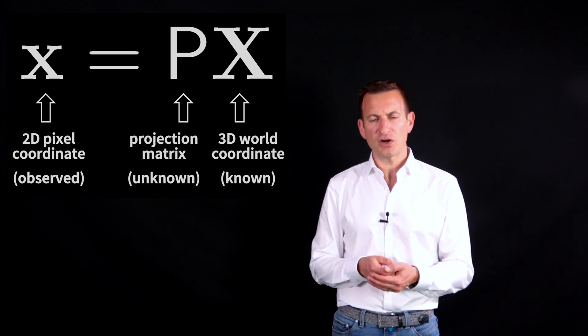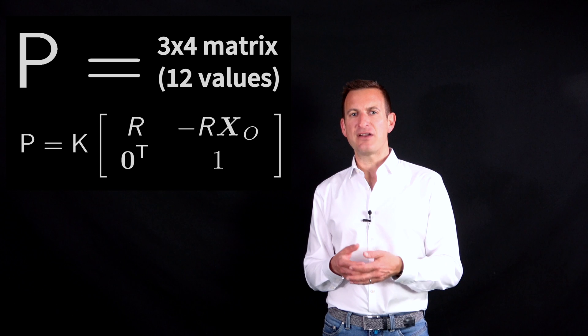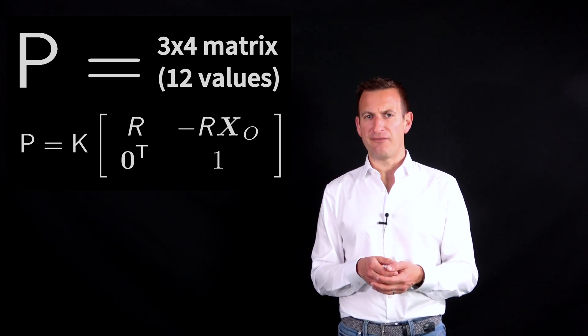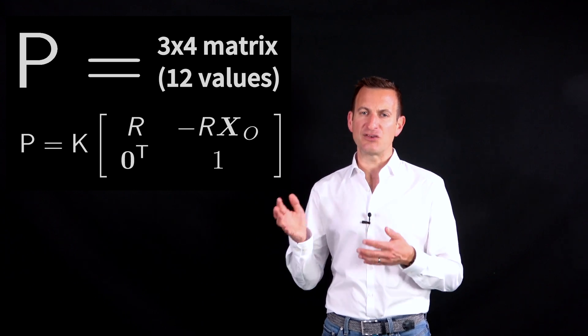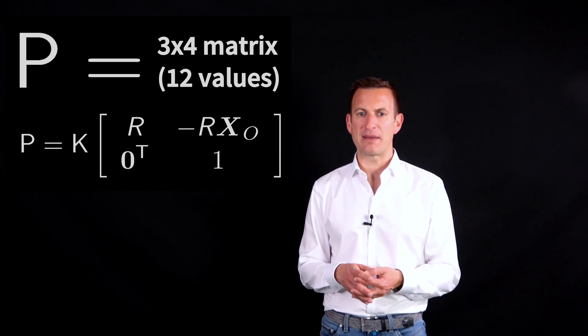We express this here in homogeneous coordinates, and so that means my matrix P is a 3 by 4 matrix. So it has 12 values that I actually need to fill. DLT allows me to estimate those 12 parameters here.